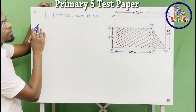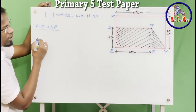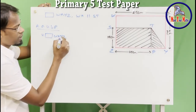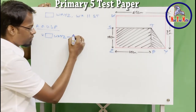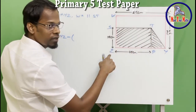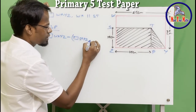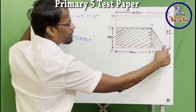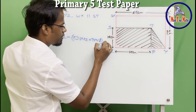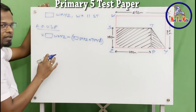So the area of the unshaded portion equals the area of rectangle WXYZ minus the area of rectangle STPZ, plus the area of triangle TPY. So if we find each of these, we will be able to find the area of the unshaded portion.